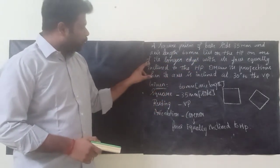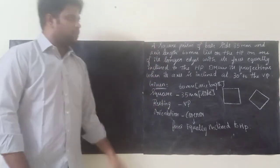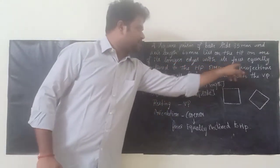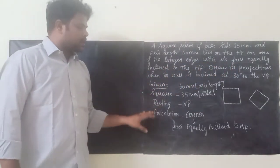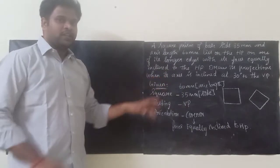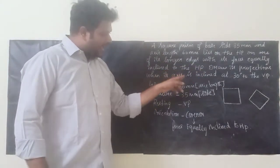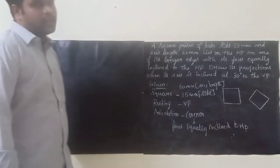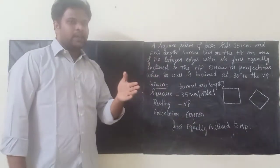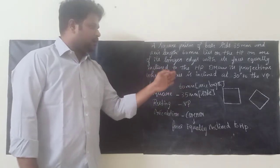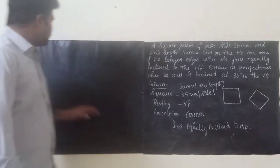On one of its longer edges, with its faces equally inclined to HP. Just underline the words 'faces equally inclined' — for the resting orientation we have to read the full question and then come to a conclusion. Draw the projection when its axis is inclined 30 degrees to VP. Where the axis is inclined, we have to draw the base diagram. Here axis is inclined 30 degrees to VP, so we have to draw the base diagram in VP.